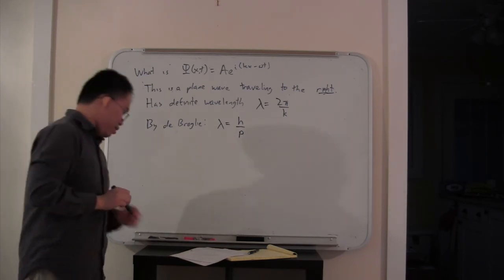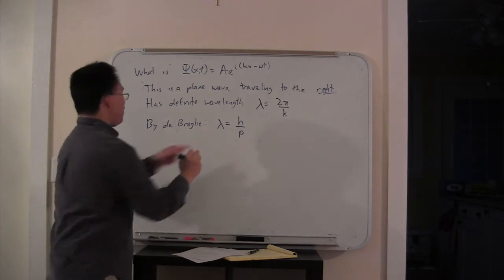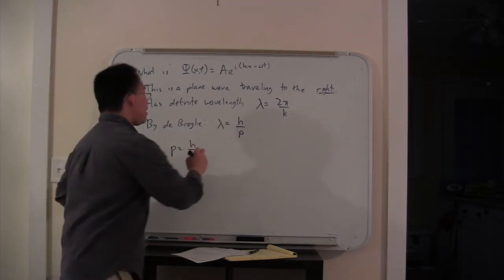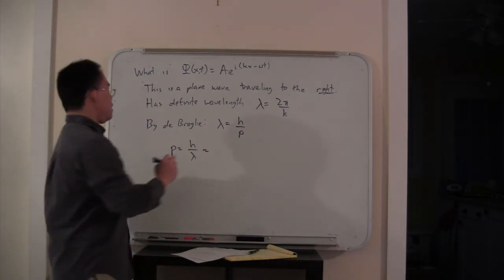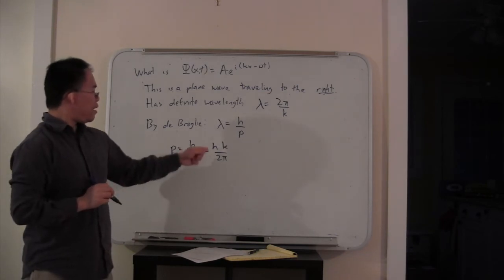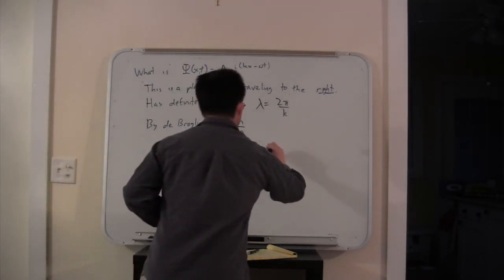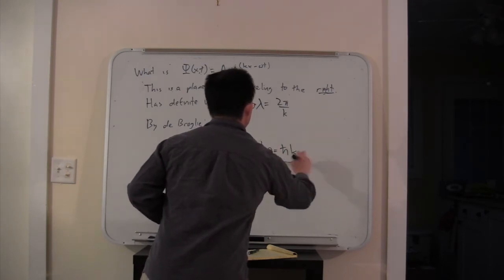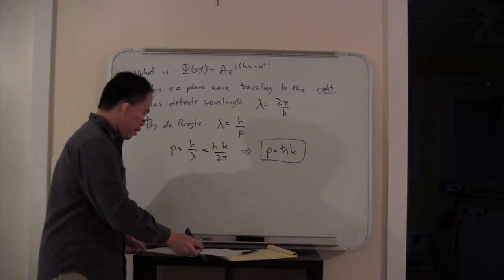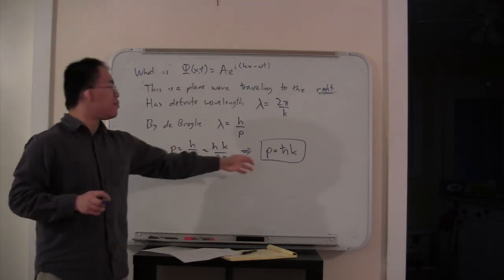If we put these two ideas together, we have p equals h over lambda. Plugging that in, that's h times k over 2 pi, but h over 2 pi is h-bar. This leads us to the important relationship that p equals h-bar k for this solution to the Schrödinger equation. This plane wave solution represents something that has some definite momentum.